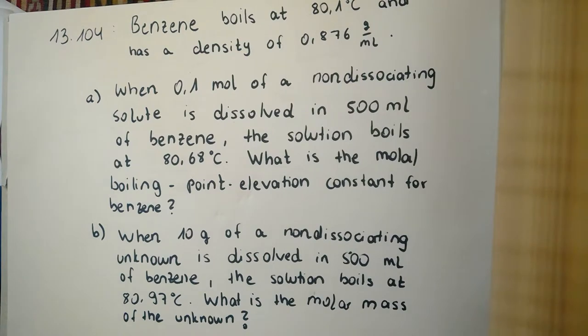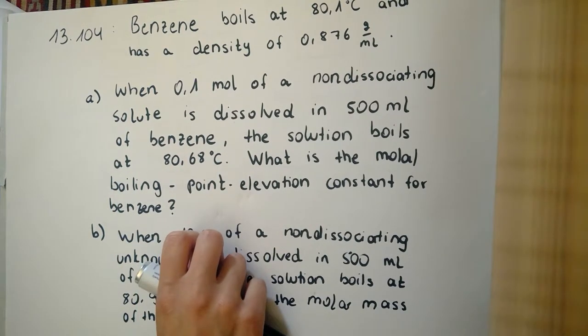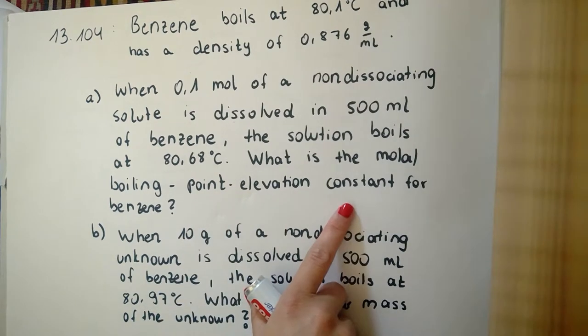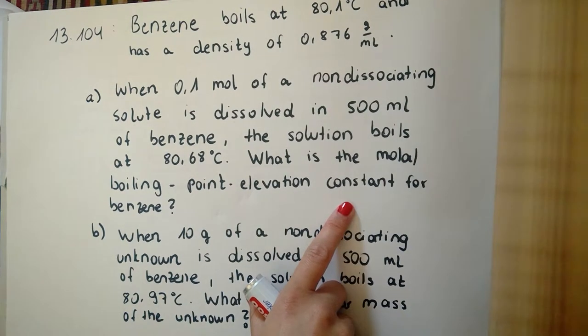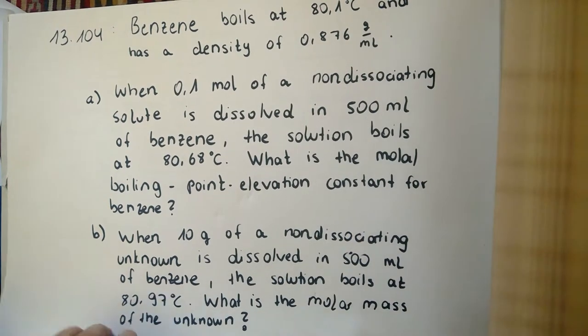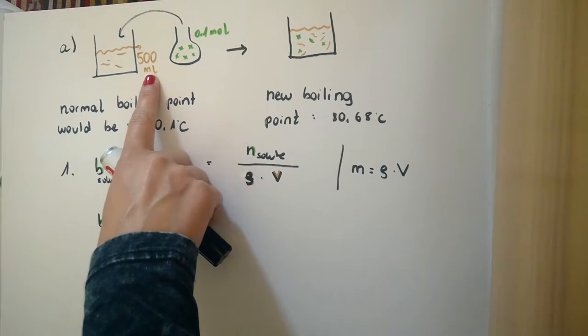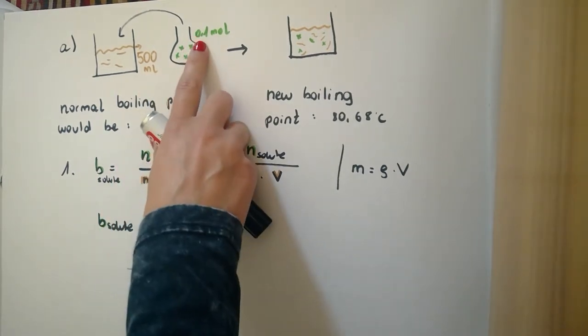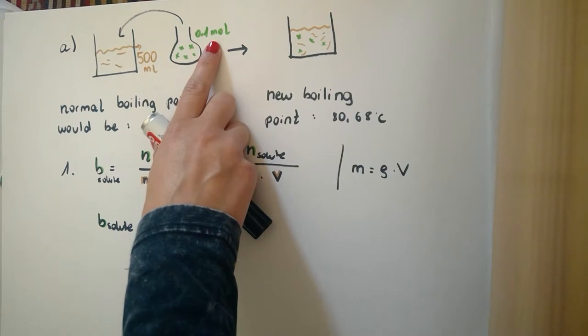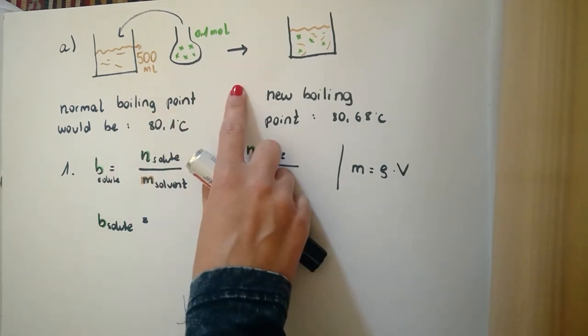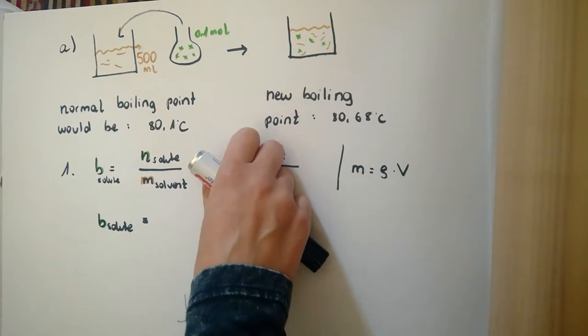In part A, they ask for this ebullioscopic constant, or you can also call it the molar boiling point elevation constant. First, let us illustrate what happens. We have 500 mL of benzene and pour 0.1 mol of our solute in the 500 mL of benzene. If we heat this mixture, we would see that it boils 0.58 degrees later as if there was only benzene.